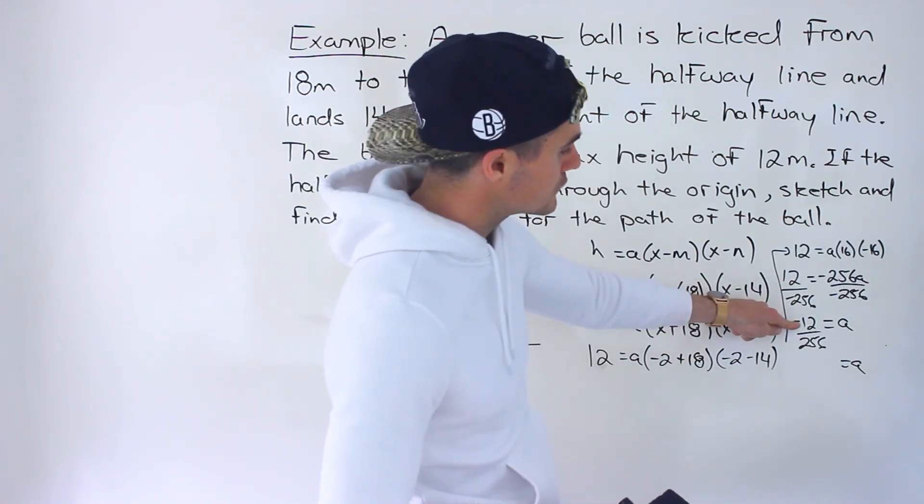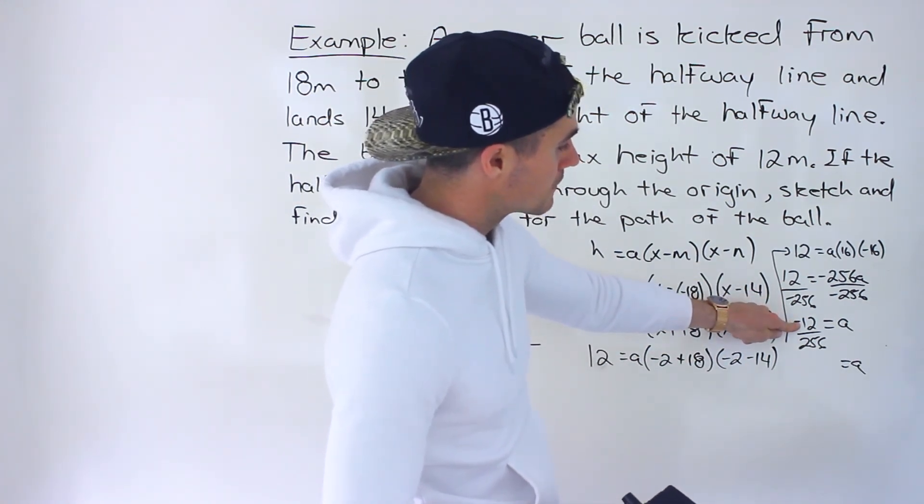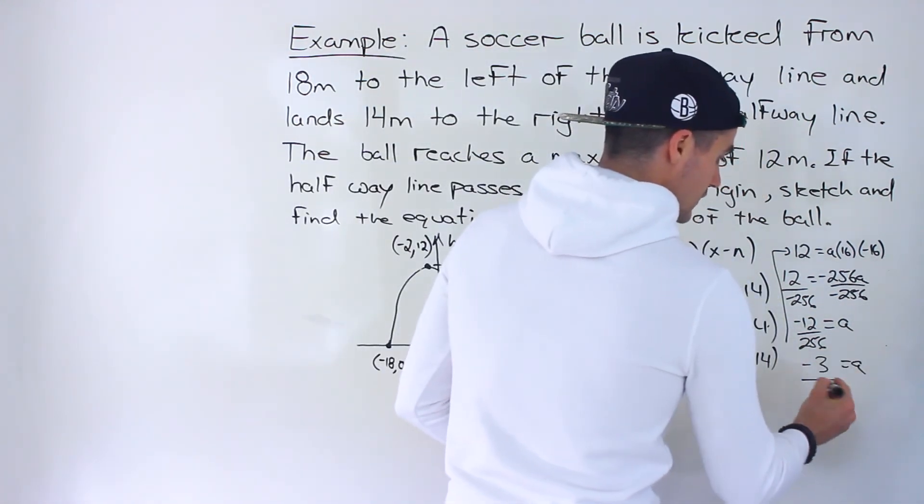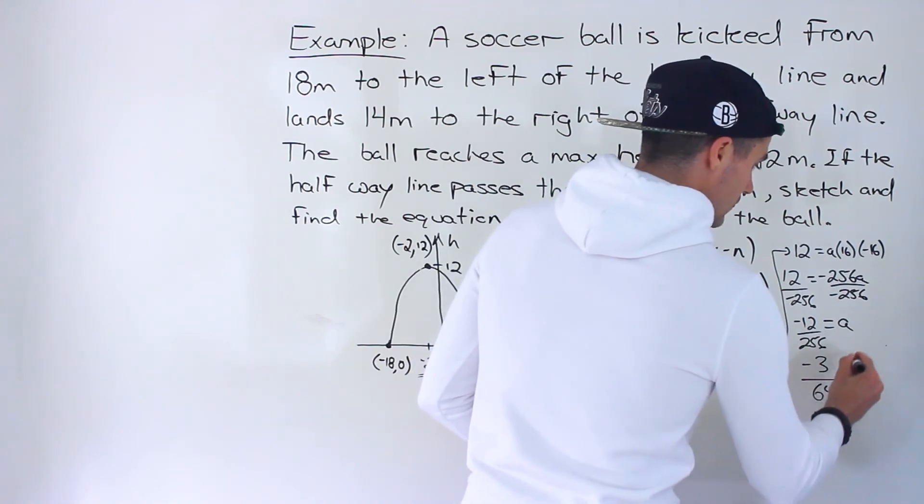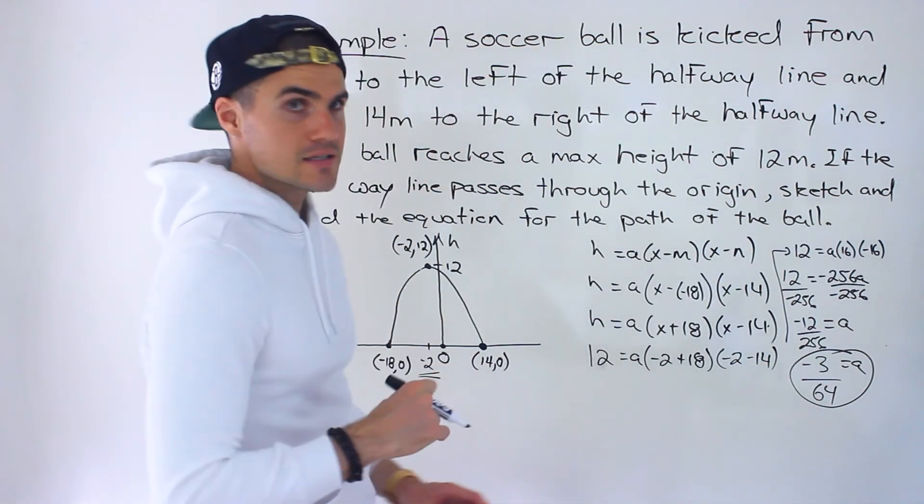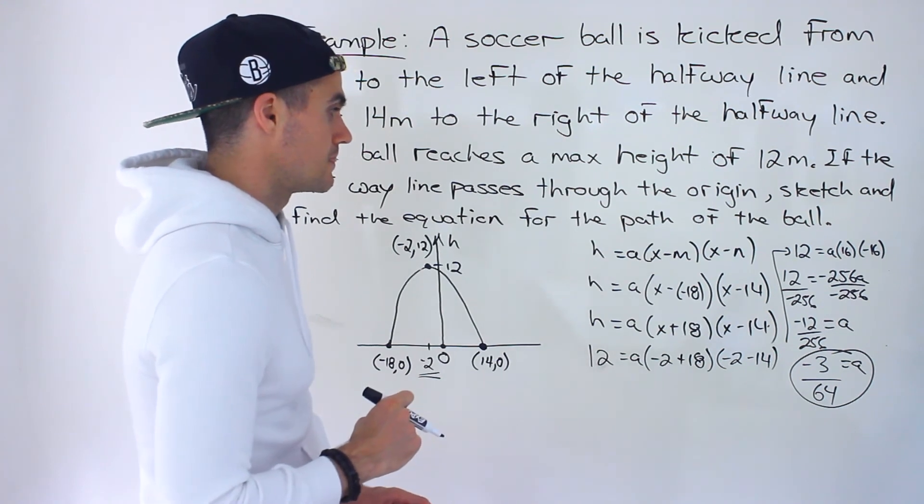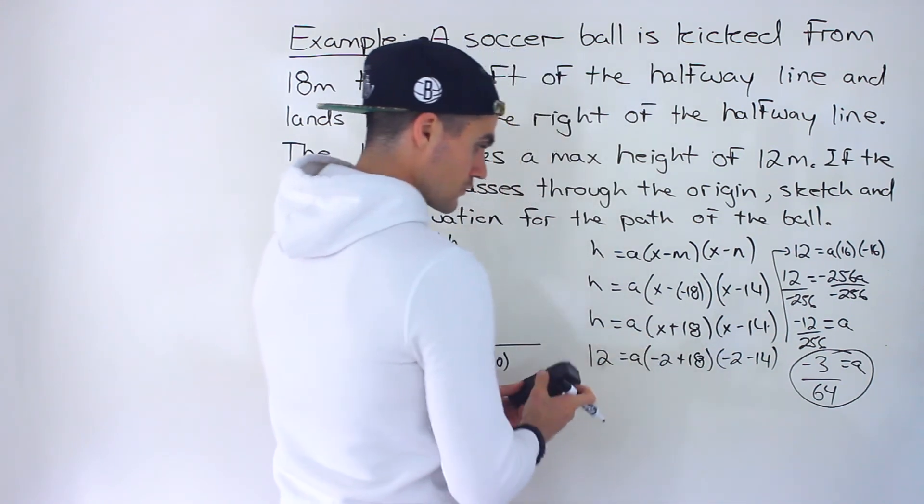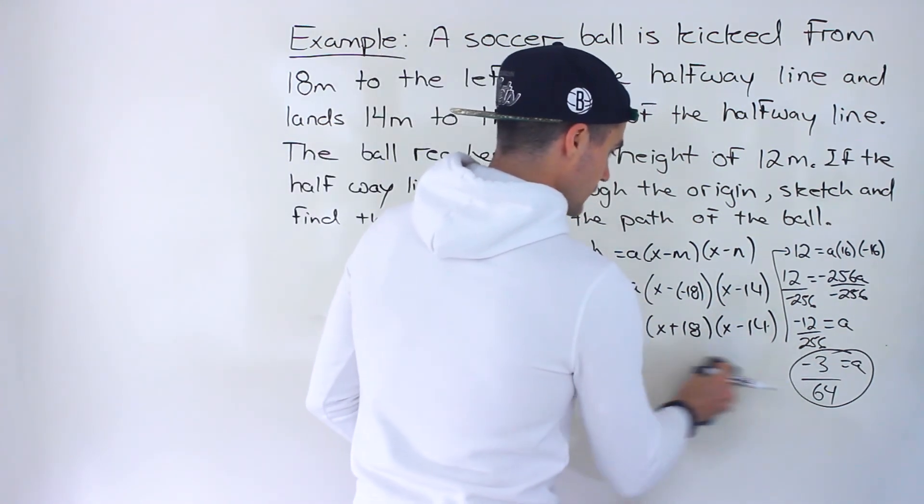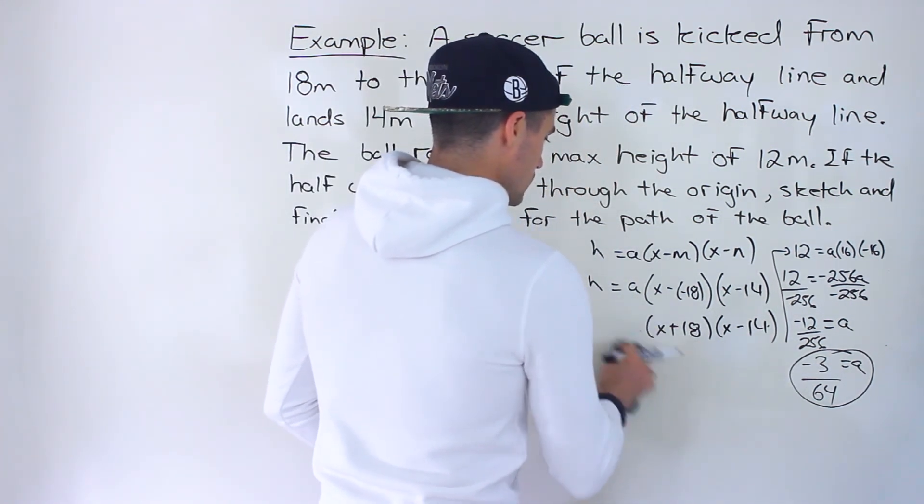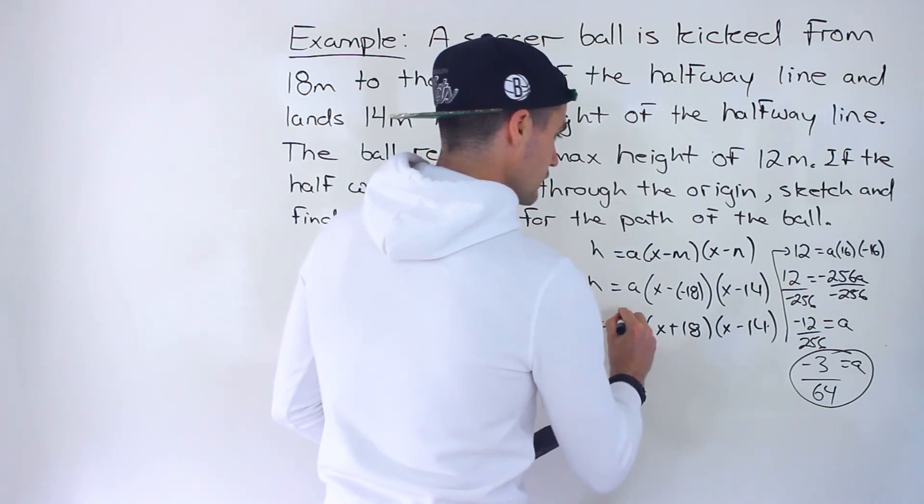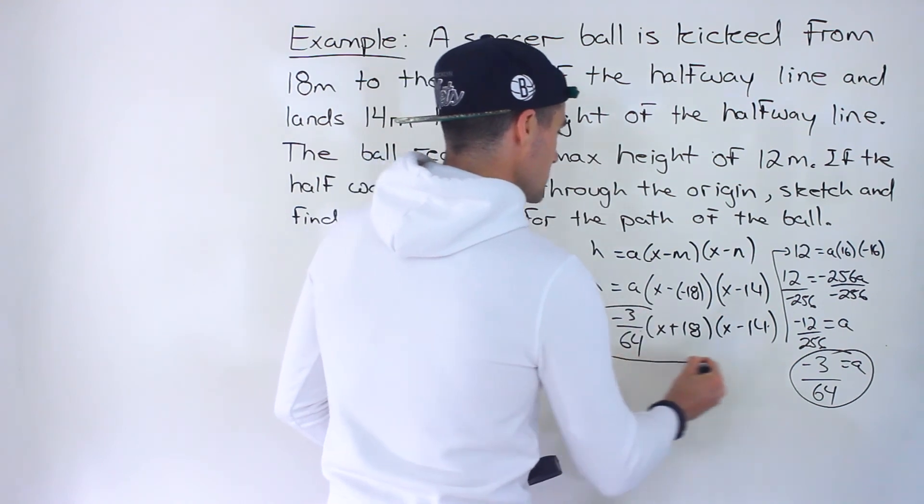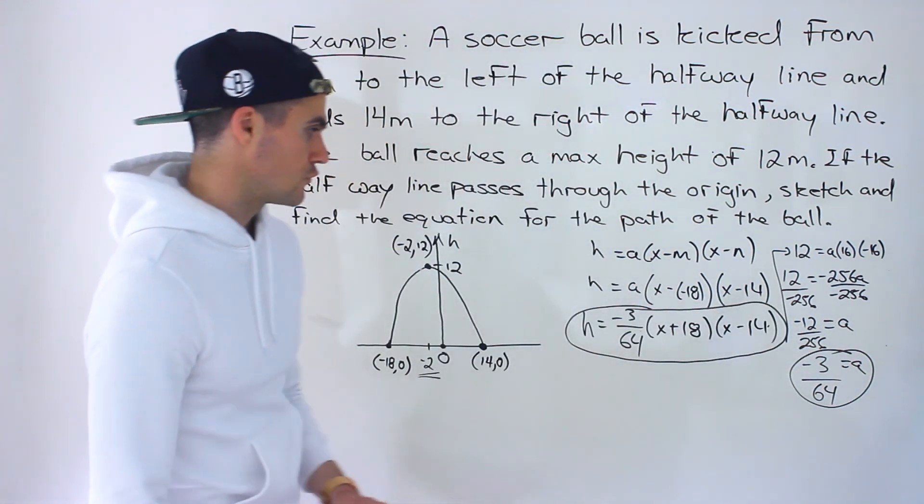You could divide the negative 12 by 4 to get negative 3, and then the 256 divided by 4 would give us 64. So that ends up being the a value. We could plug in this a value over here, so we end up with h equaling negative 3 over 64 times (x + 18)(x - 14).